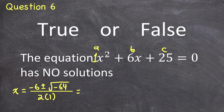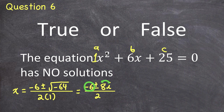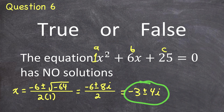The square root of negative 64 can be split into the square root of negative one times the square root of 64, which is i times 8, or 8i. Dividing the numerator terms by 2 gives x equals negative 3 plus or minus 4i. These are the complex solutions to the quadratic equation. There are no real solutions, but there are complex solutions. So this question is false.